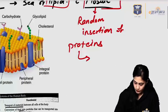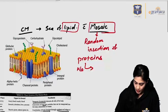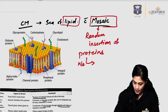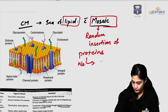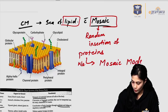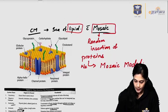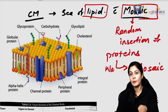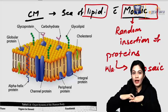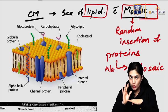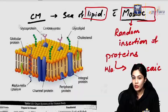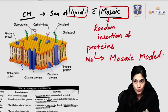This model is known as the fluid mosaic model, especially asked about in university exams — you should know why it is called so. It is called the fluid mosaic model, or the double-layer mosaic model, of the cell membrane. Scientists initially thought proteins sat on top of a lipid layer, but that was wrong. Singer and Nicholson discovered this model — the fluid mosaic model.